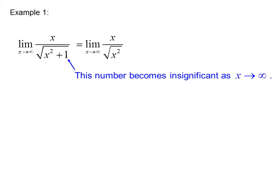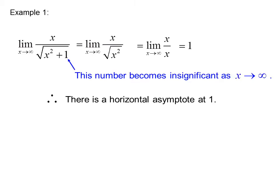However, as x goes to infinity, x is positive. So we can rewrite the expression as the limit as x goes to infinity of x over x, which equals 1. Therefore, there is a horizontal asymptote at y equals 1.